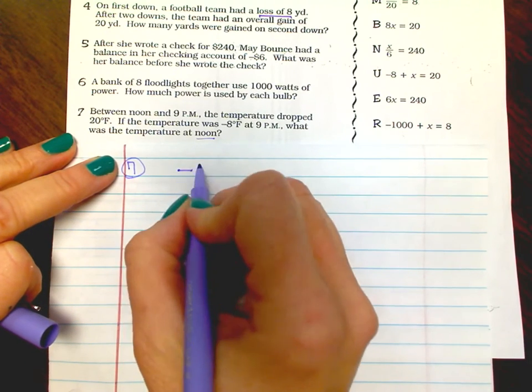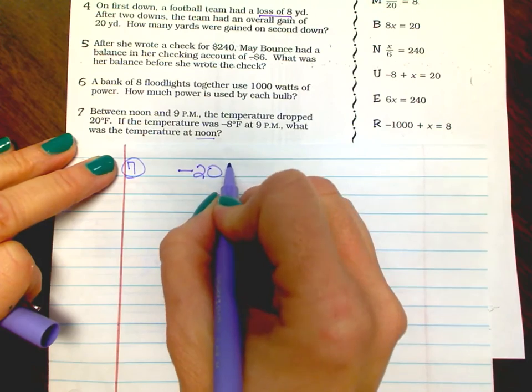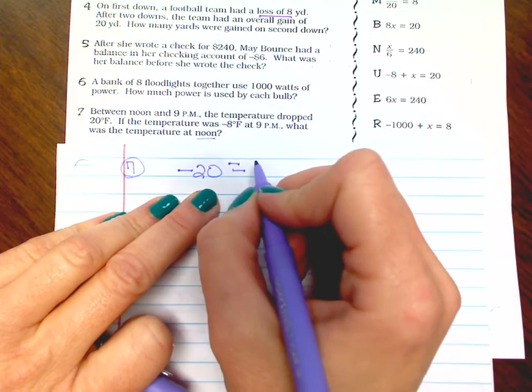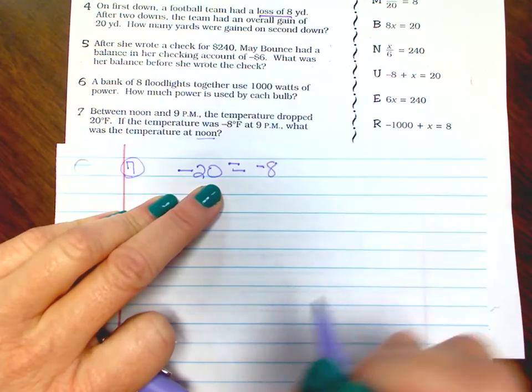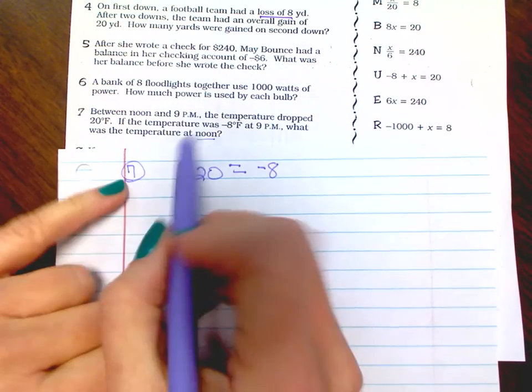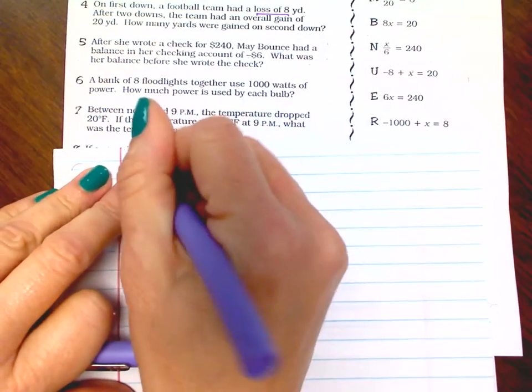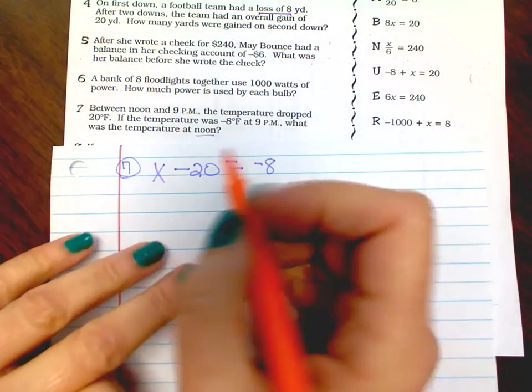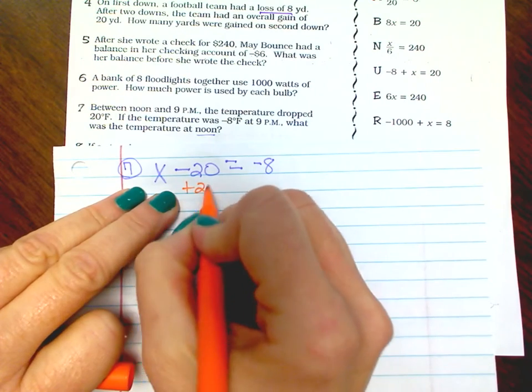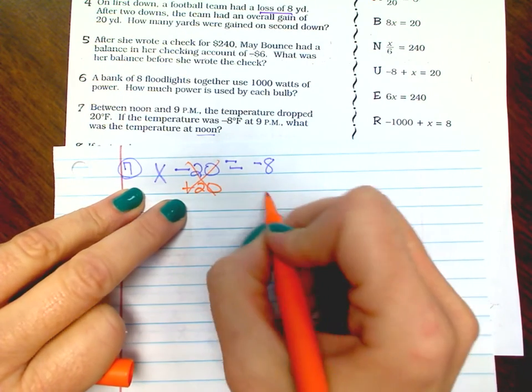So we know it dropped 20 degrees. When it drops you're gonna, that's a negative, and we know it was negative eight at 9 p.m. So what did it start out being? That's what we want to know. Let's get your 20 over here so that cancels it out.